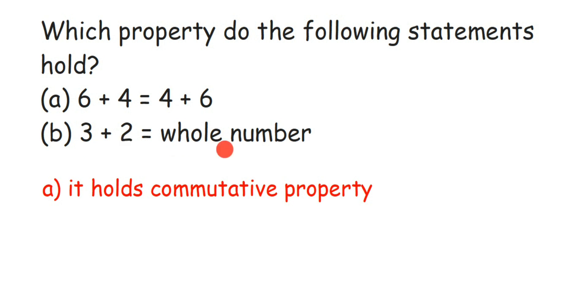final answer is a whole number. Which property is that? It's a closure property. Closure property says that whenever you're adding two whole numbers, it could be any number like 10 or 12. When you're adding them, it will